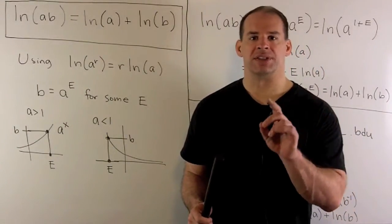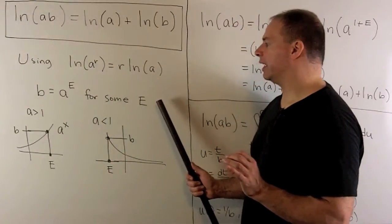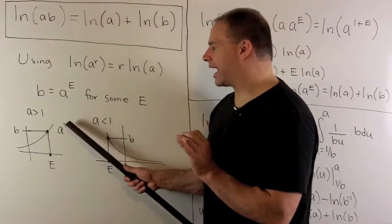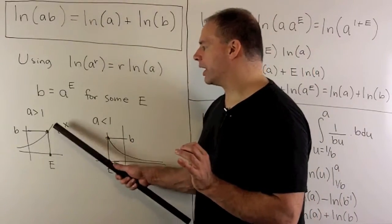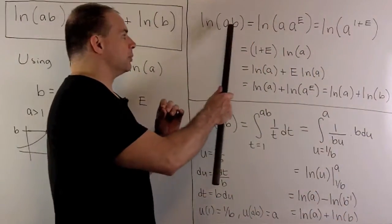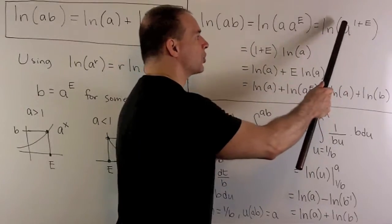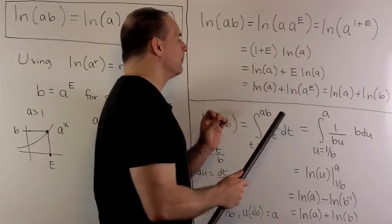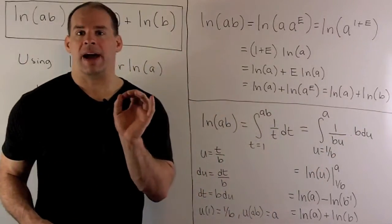Since a and b are positive numbers — and we'll assume they're both not equal to one — b equals a to the e for some e, where e stands in for exponent. If a is not equal to one, the graph of a to the x looks like either an increasing or decreasing exponential, so for any positive b there is some e such that a to the e equals b. Now substituting: natural log of a times b equals natural log of a times a to the e, which combines to a to the one plus e. Using our exponent rule, I bring the one plus e out in front, distribute to get natural log of a plus e times natural log of a, then put e back in the exponent so a to the e becomes b. That gives the identity using just our first property.